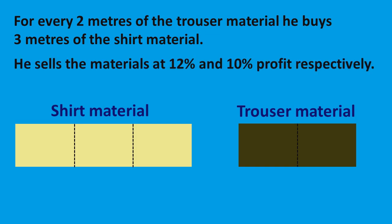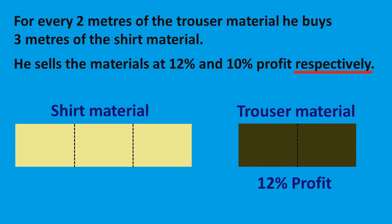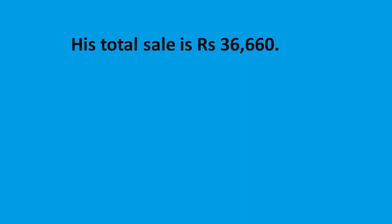He sells the materials at 12% and 10% profit respectively. Here, 'respectively' is the keyword. So we have to see the previous line in which trouser material comes first. So we have to take 12% for trouser material and 10% for shirt material. His total sale is Rs. 36,660.